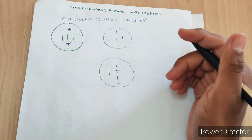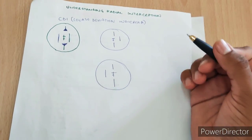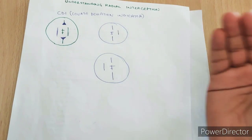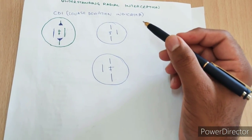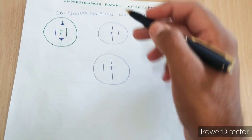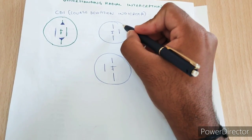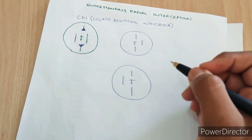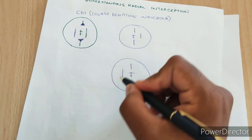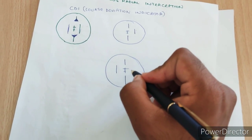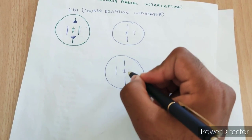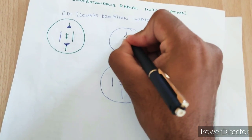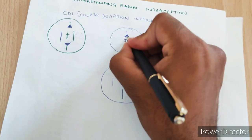The Course Deviation Indicator or CDI is basically an instrument in the aircraft which shows our aircraft's relative position to or from the station. If the aircraft is towards the left of the course, this particular indication will be shown where we have to turn our aircraft to the right, depending on the course selected in the CDI. If the aircraft is towards the right of the course, this particular indication will be shown where we turn our aircraft towards the left to intercept that particular radial. There is also a to and from indicator shown by an arrow.